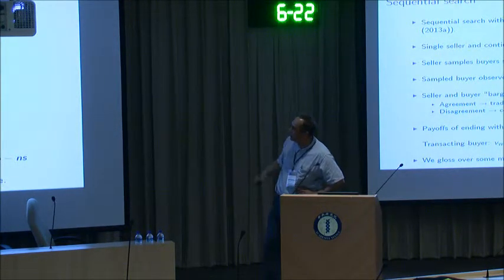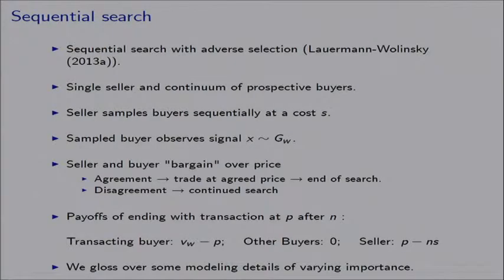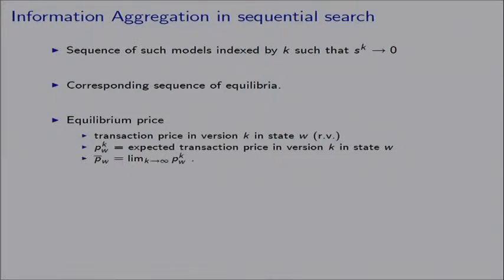Now I want to talk about sequential search. The result for sequential search with adverse selection is based on a joint paper with Lauermann. There is a single seller and a continuum of prospective buyers. The seller samples buyers sequentially at cost S. A sampled buyer observes signal X with the same technology as in the auction. The seller and buyer bargain over price. Agreement leads to trade at the agreed price and ends the search; disagreement leads to continued search. The payoff for a transacting buyer is value minus price; for other buyers, zero; and for the seller, price minus sampling cost.